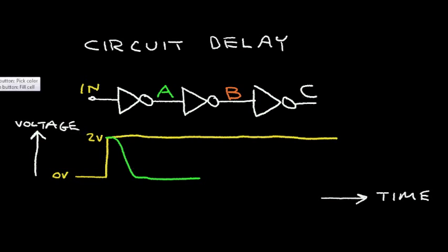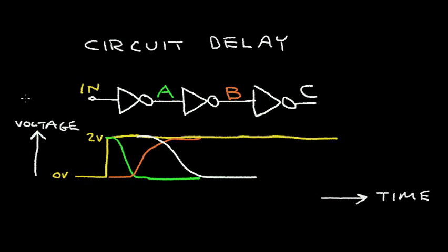When the A signal switches, the B signal can switch to a high level. So the B signal will start out at a low level, and it will switch to a logic 1 level and stay there. Now that allows the signal C to change from a one level and then transition to a zero level and stay at a zero level. So we see here that the first inverter has a certain delay, the second inverter has this delay, and the final inverter has this delay.